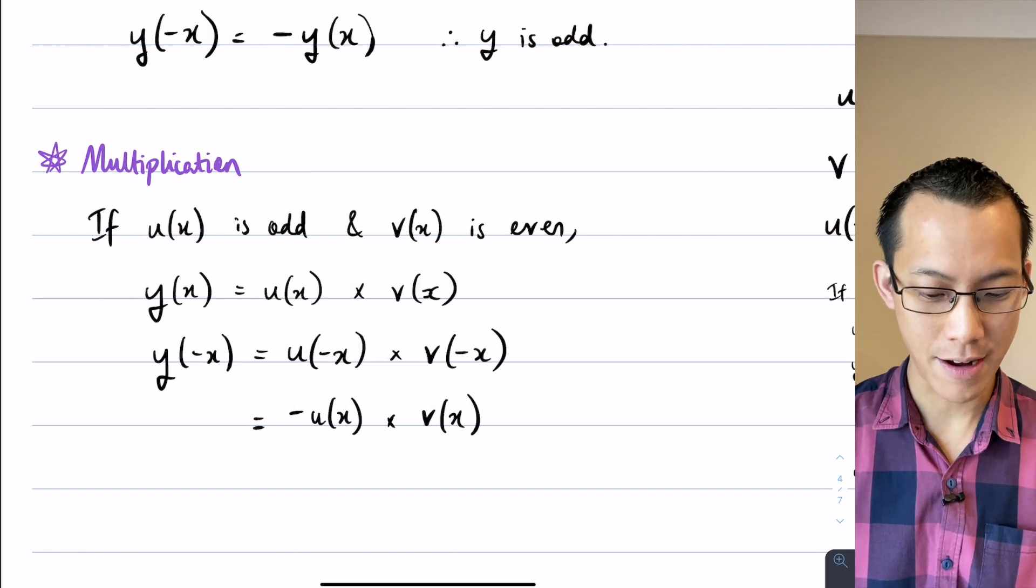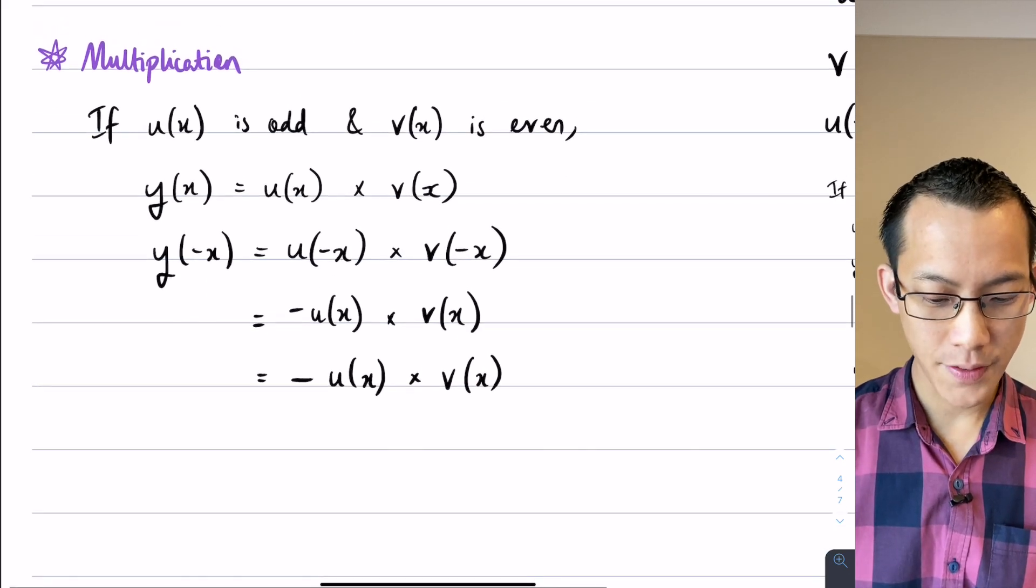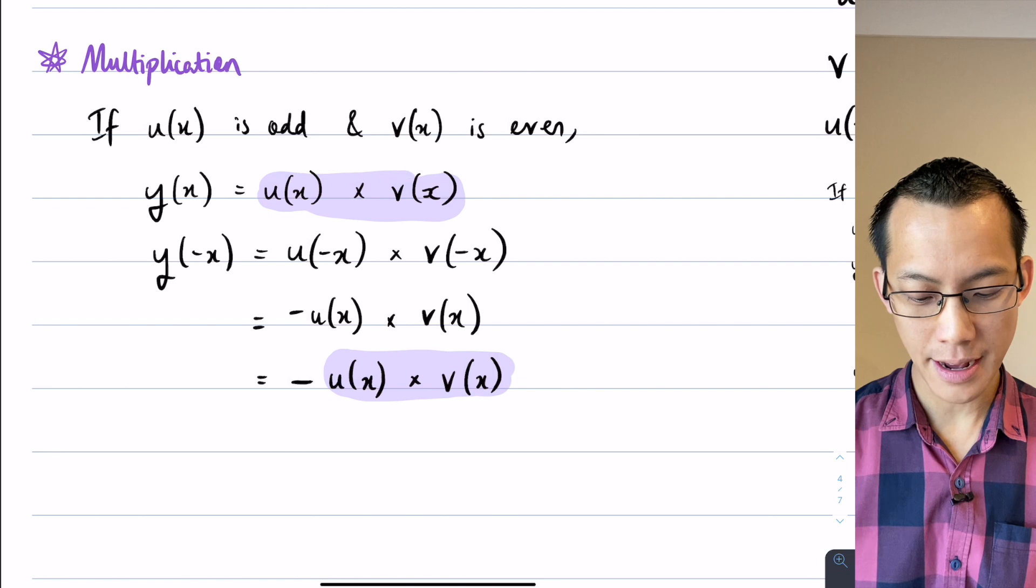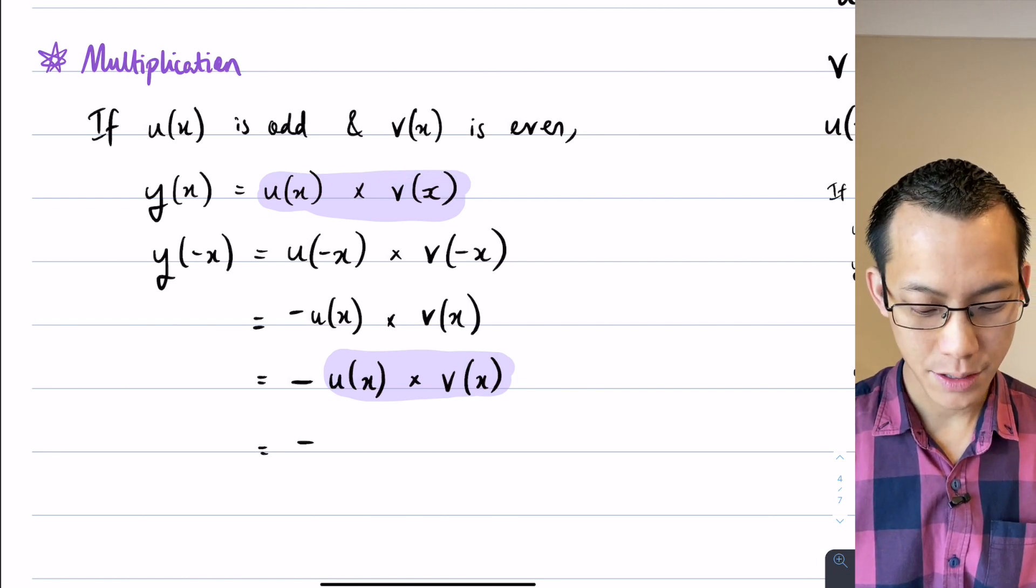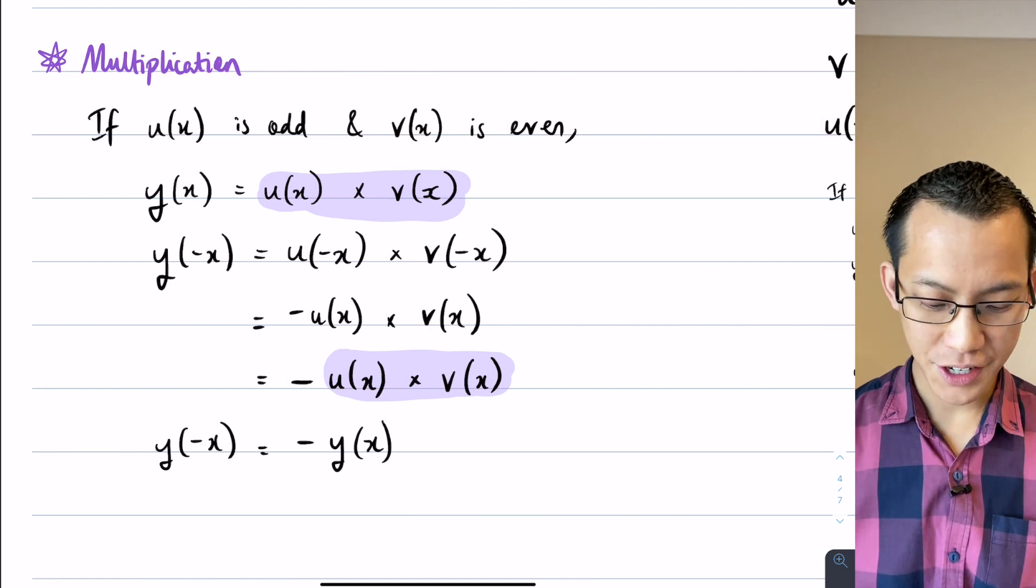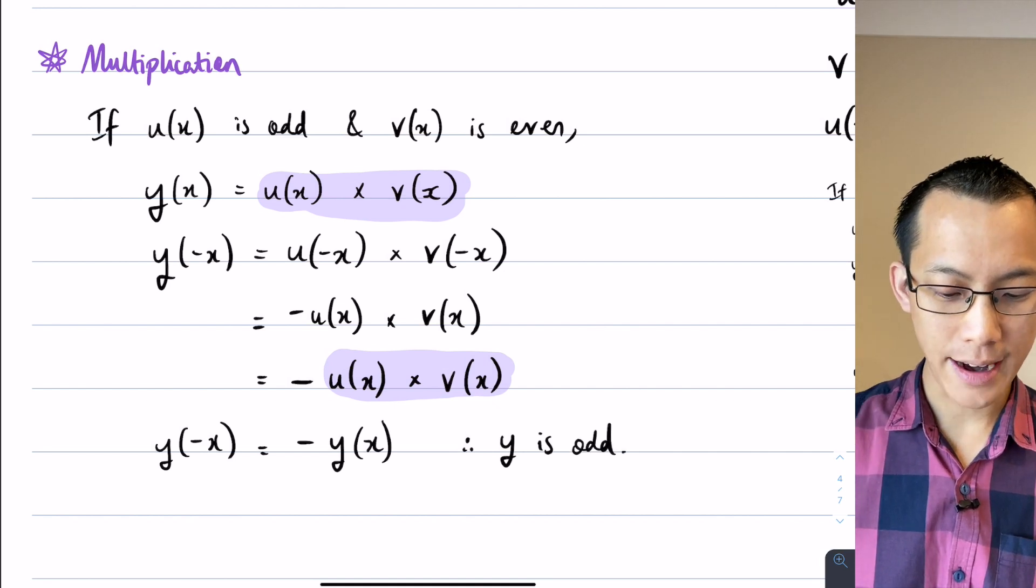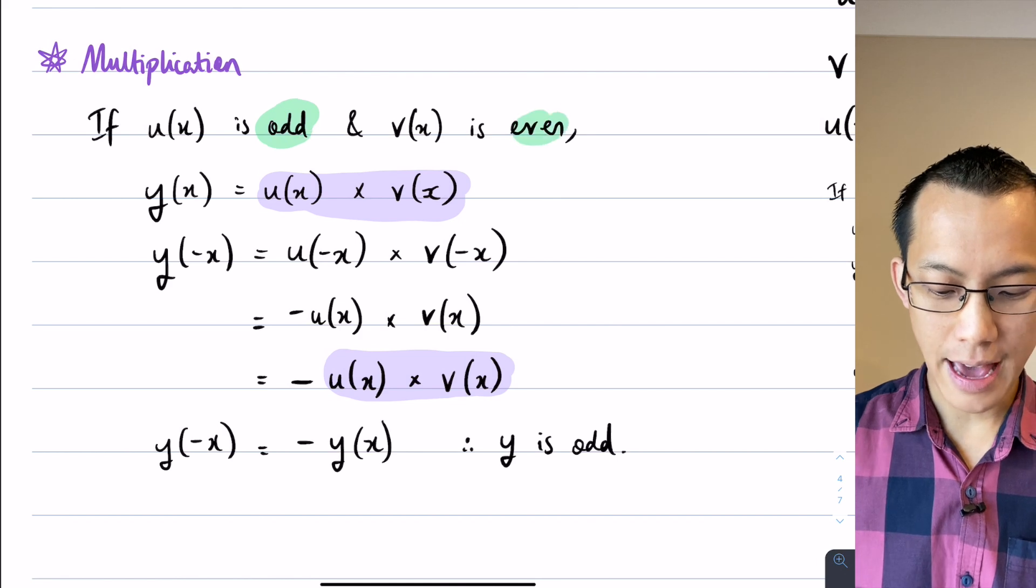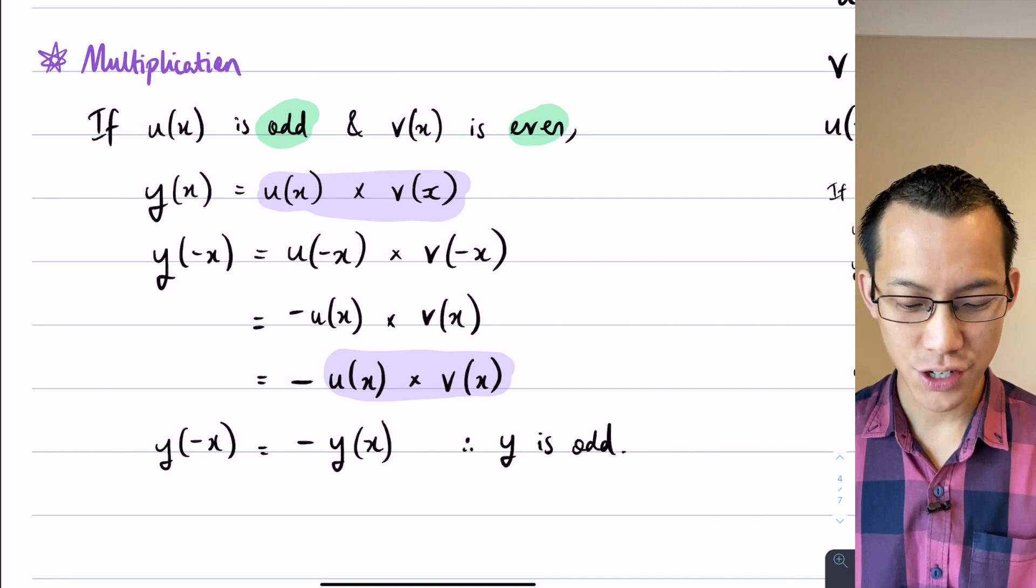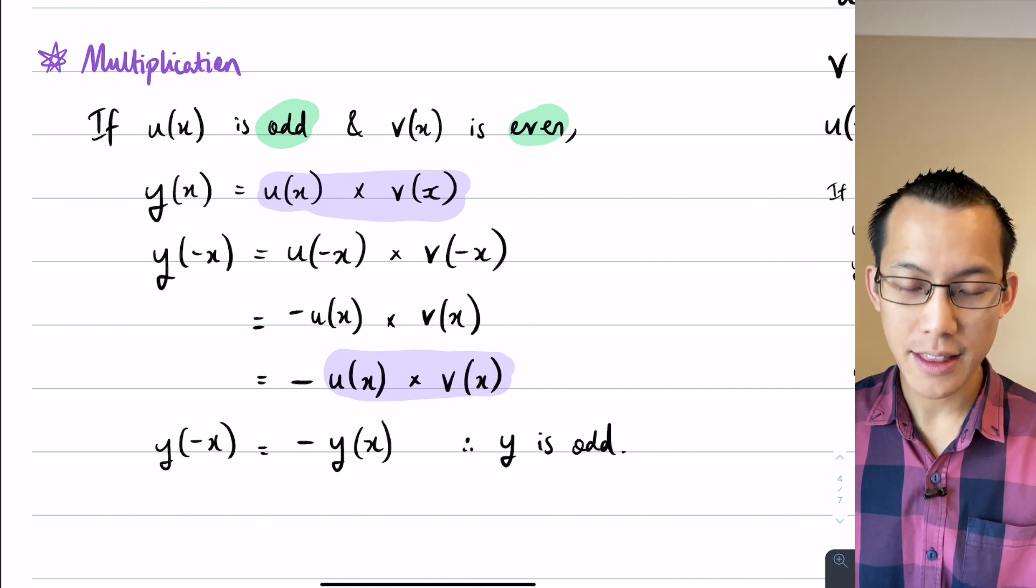So therefore I've got negative u of x times v of x. Well this is very similar. If I have a look at this part here, this part here is identical to the function y of x that I started with, just with a minus sign out the front. So it's minus y of x and then I've got y of negative x over here. Now because multiplication here is giving us this sign, I can know therefore that y is odd when I combined an odd and an even function. And just as a bonus, because division and multiplication are related here, if you divide an odd function by an even function or vice versa, you will get this same result, you'll get it being odd.